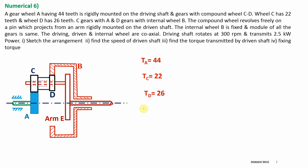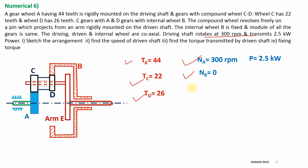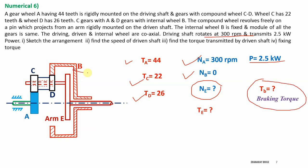Let us extract the given data. Number of teeth on gear A: 44. Number of teeth on gear C: 22. Number of teeth on gear D: 26. Speed of gear A: 300 rpm. Ring gear B is fixed, so speed of gear B, NB, equals zero. The input gear transmits power of 2.5 kW. We need to find the speed of arm E, the braking torque on fixed gear B, and the torque on arm E.